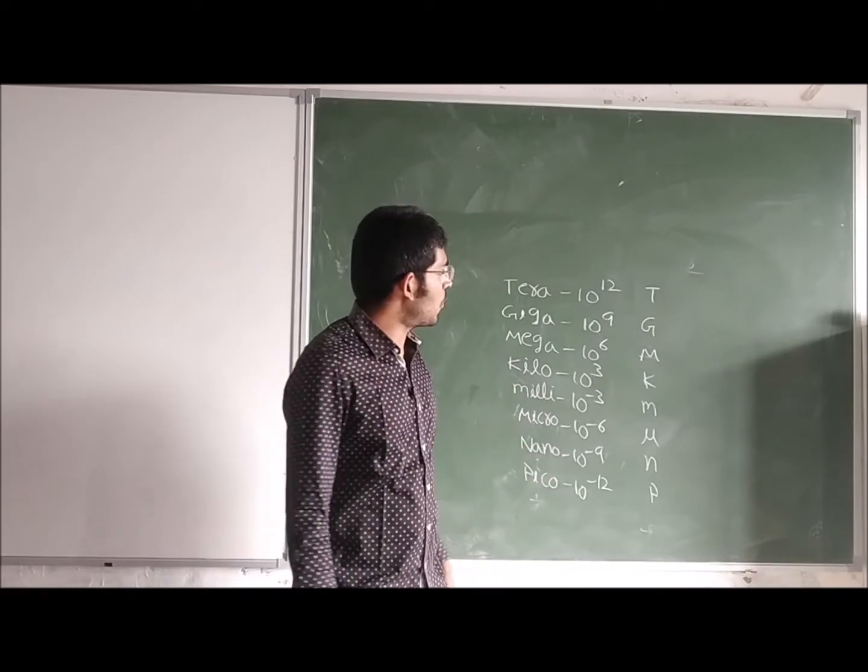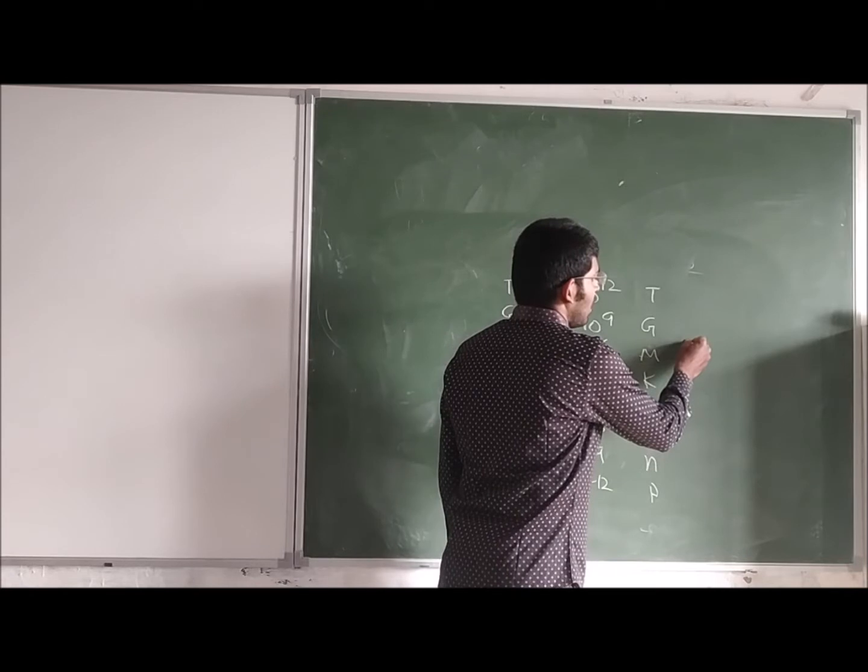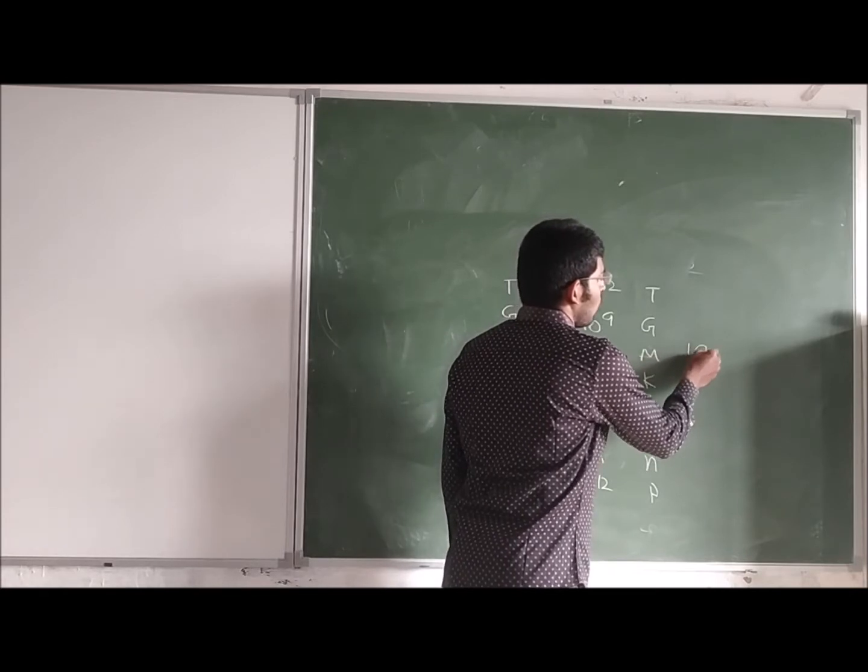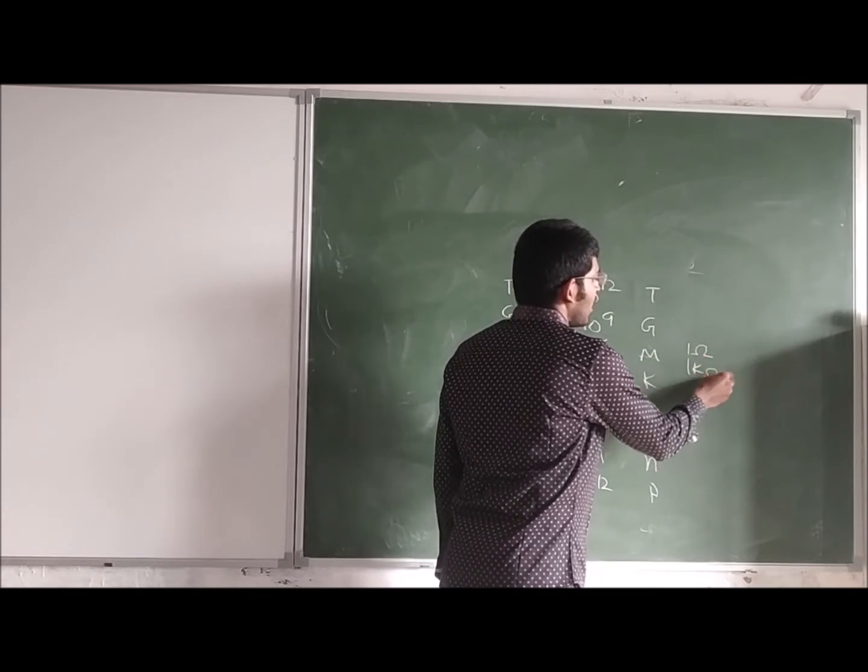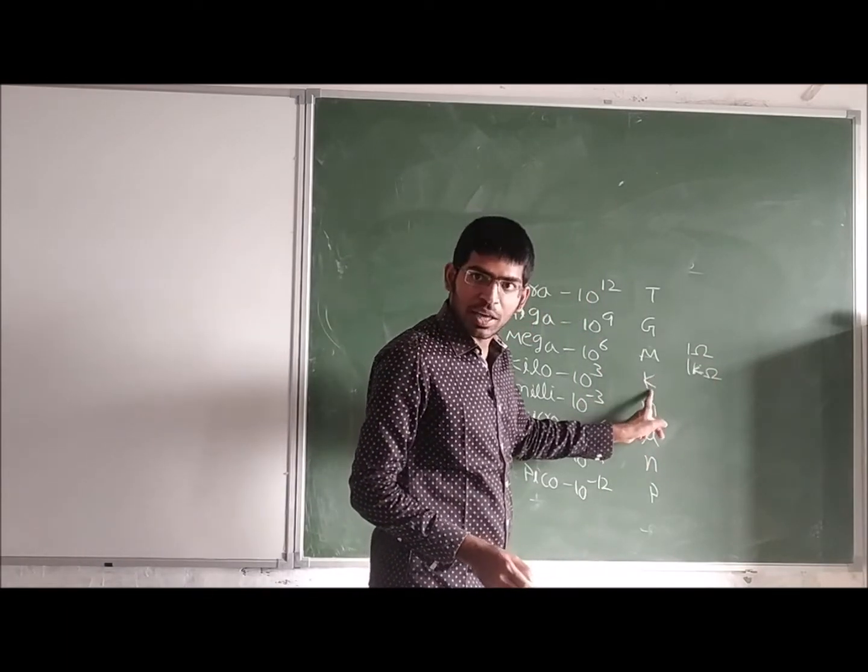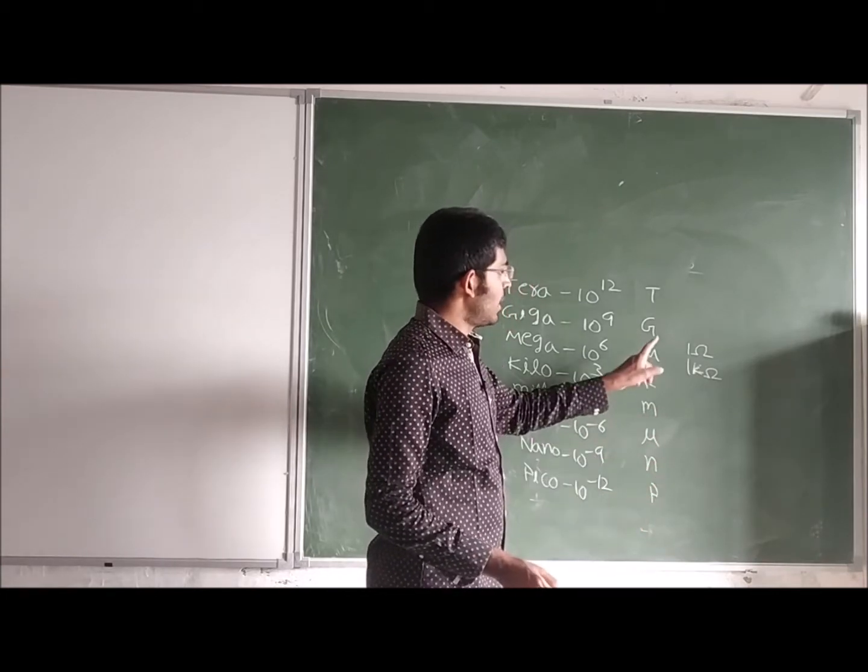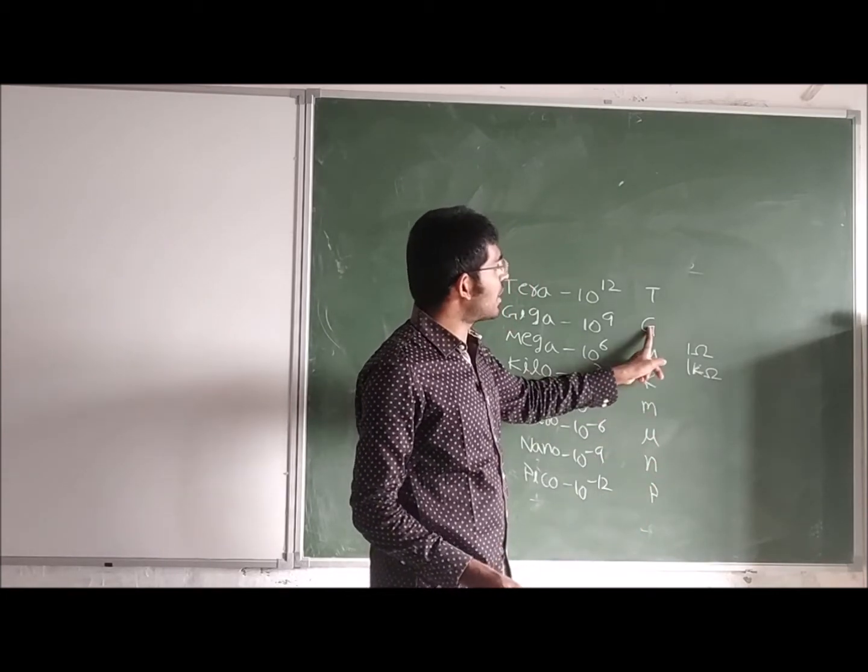When we measure resistance, we say 1 ohm, 1 kilo ohm. See, these all are small letters: small k, small m, mu, small n, small p. This is capital M, this is capital G, this is capital T.